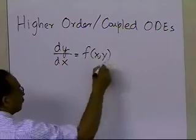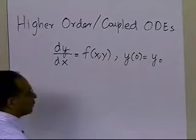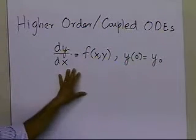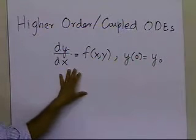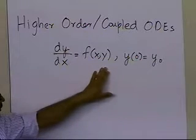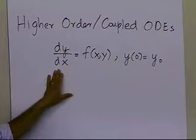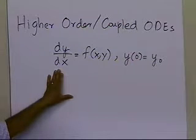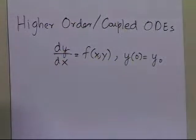You are given a first-order differential equation which can be written in a particular form, along with some initial condition. That is the differential equation you can solve using Runge-Kutta's second-order method, fourth-order method, or Euler's method. This may make you believe these methods are only good for first-order ODEs — so how do we solve higher-order or coupled ordinary differential equations?